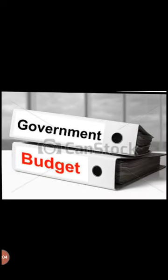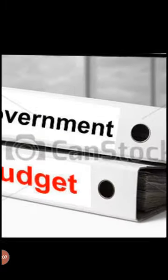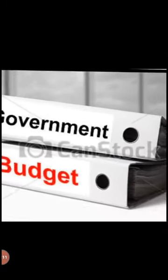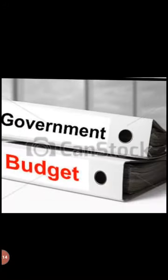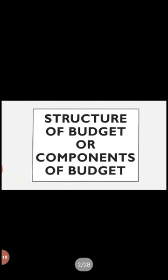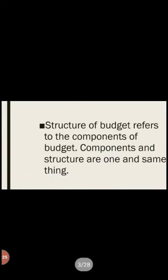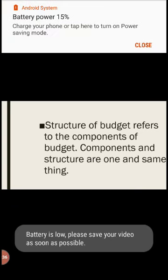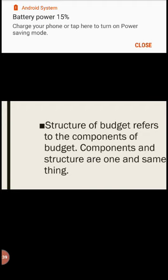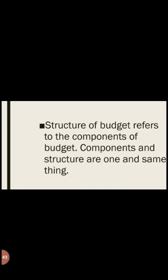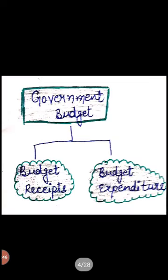After the discussion of government budget, we are going to do the next topic: the structure or components of the budget. The structure of the budget refers to its components — both terms mean the same thing. The government budget is divided into two parts: budget receipts and budget expenditure.